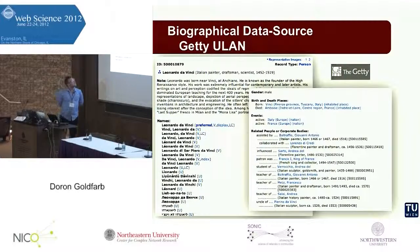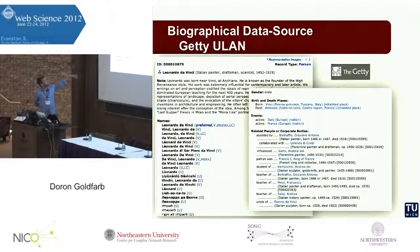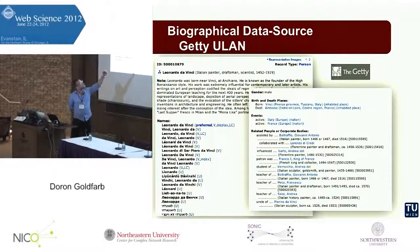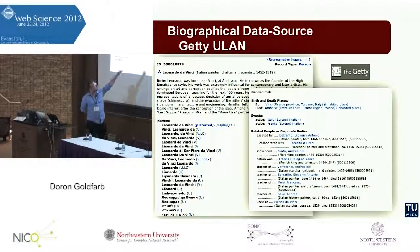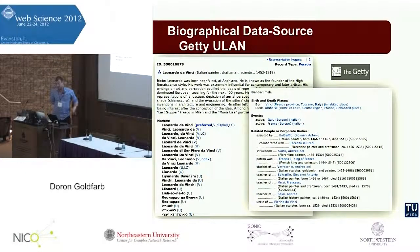The Union List of Artist Names provides a more or less standardized terminology for annotating artworks with their creators and personal related relationships. As you can see, we have a variety of name spellings for Leonardo da Vinci, along with birth and death place and date. Interestingly, we also have related people or corporate bodies — you can see categories like 'assisted by,' 'influenced,' 'patron,' and so on. This was the first data source we considered using.